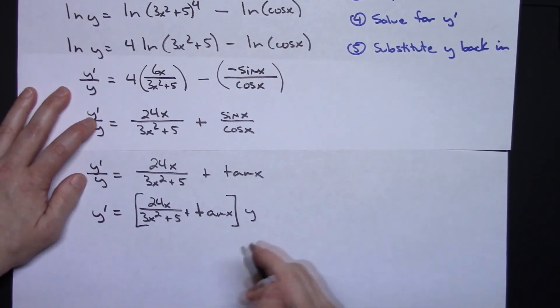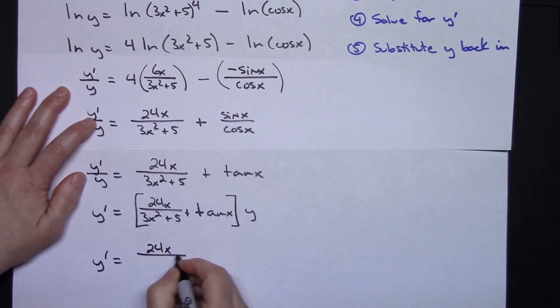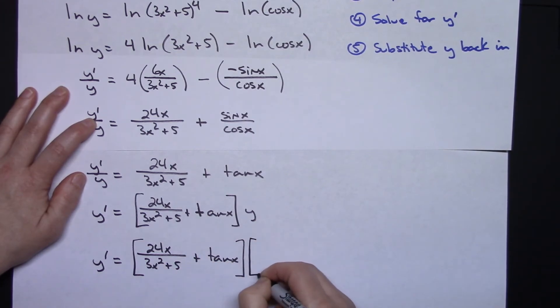So then y prime is equal to 24x over 3x squared plus 5 plus tangent x, and then plugging that back in, 3x squared plus 5 to the fourth all over that cosine x.